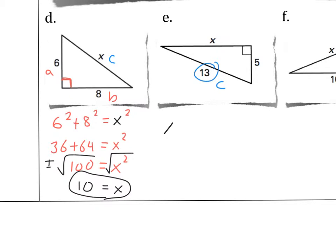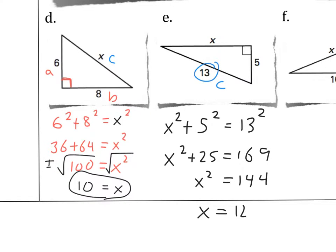So now when we set this other one up, x is a leg, 5 is a leg, and 13 is the hypotenuse. So notice the variable isn't always the one that's by itself. Now we simplify things. x² + 25 equals 169. And so x squared equals 144. And then when we square root both sides we get 12.